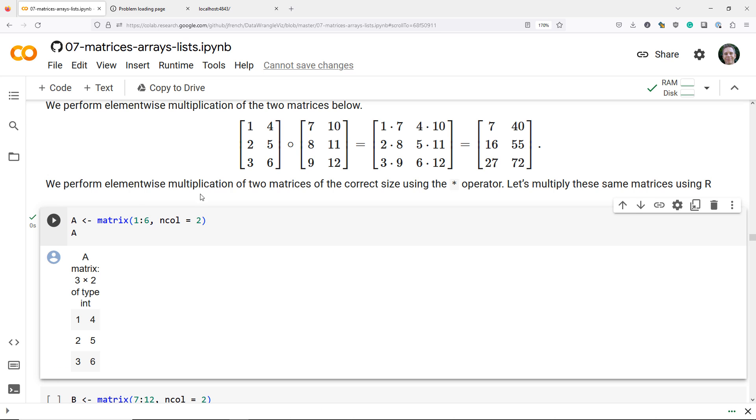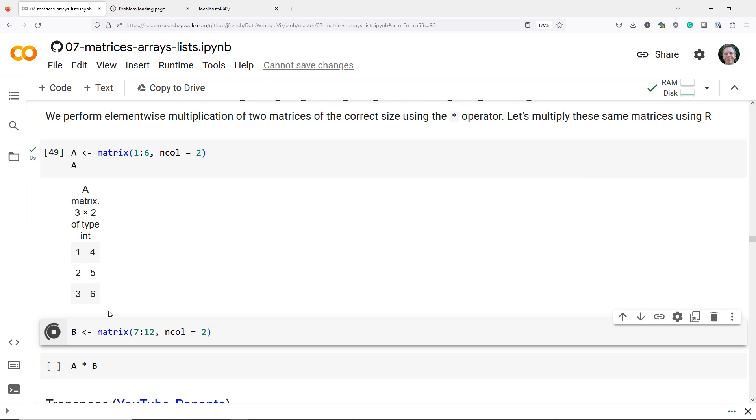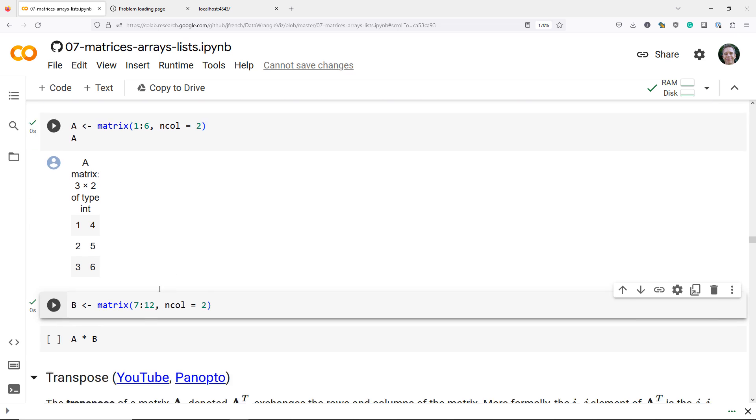So we have the matrix A, which is this matrix here. We use the matrix function like we've used before to define that matrix. We define B in a similar fashion, and we get this matrix right here.